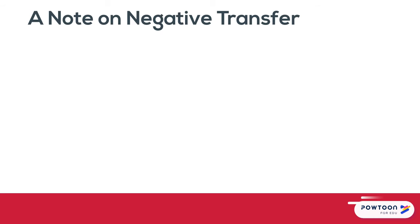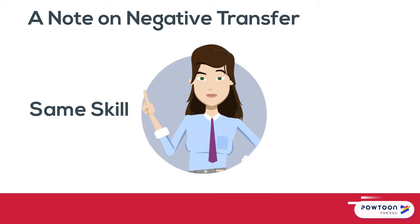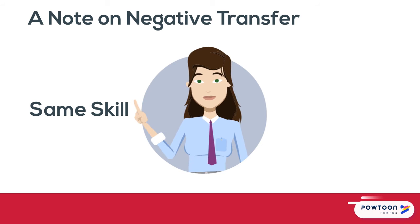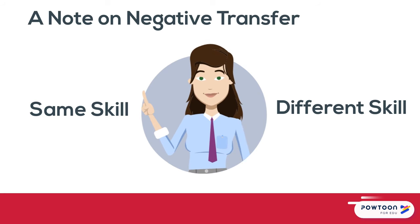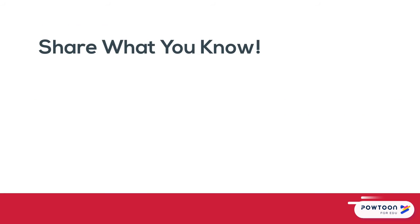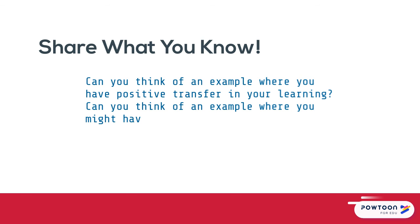As stated earlier, negative transfer is all around us. Recognizing and teaching the differences in situations can greatly empower students to intrinsically understand the skills necessary at that moment. Can you think of an example where you have positive transfer in your learning? Can you think of an example where you might have negative transfer or interference with new learning? Share what you know.